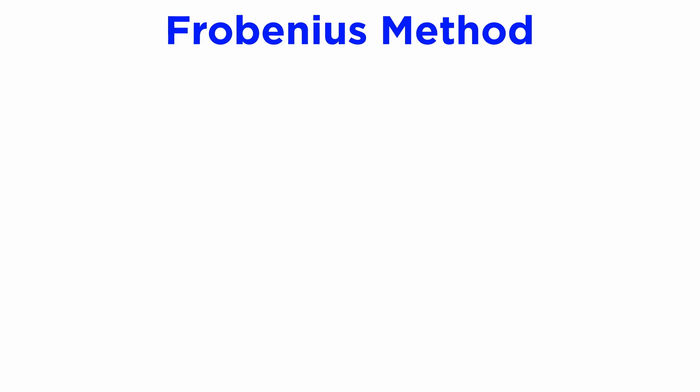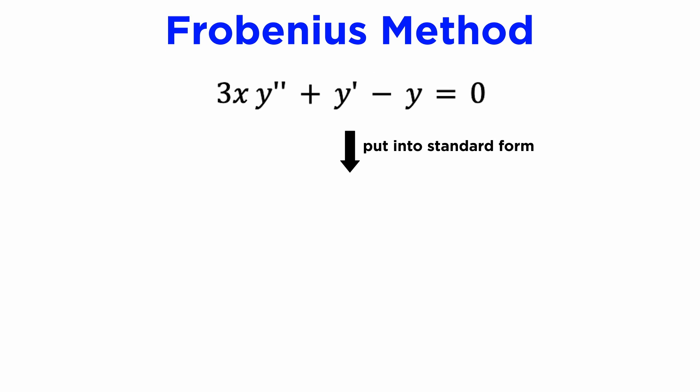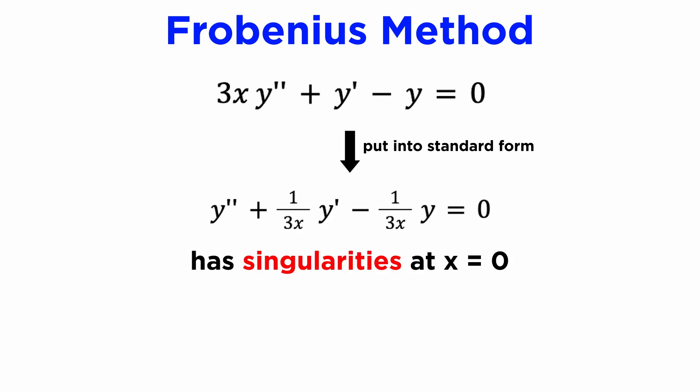Let's see an example to illustrate the point. We want to find a power series expansion for the solution to 3xy'' + y' − y = 0. We first need to get our differential equation into the standard form, where the coefficient of the highest order derivative is 1, so we divide both sides by 3x. We now see that our coefficient functions have singularities at x = 0, which is the point we want to expand about, so we need to use the Frobenius method.